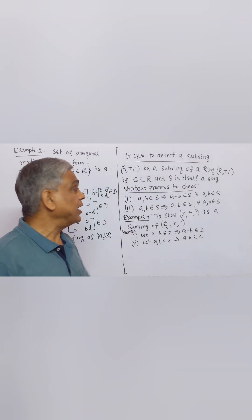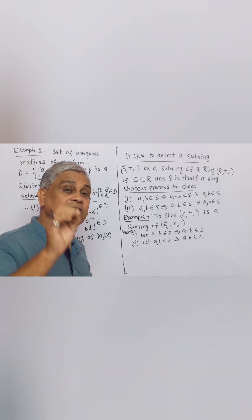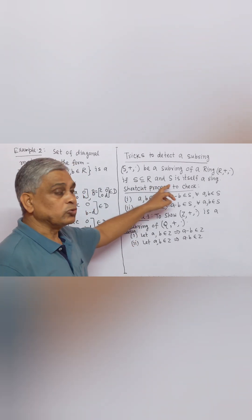S be a subring of a ring R if S is subset of R and S is itself a ring. Shortcut process to check.